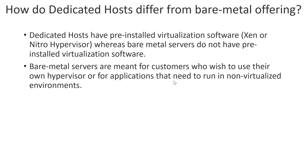Bare metal servers are meant for customers who want to use their own hypervisors, or who have applications in a legacy environment that cannot run on a virtualized environment. They want a non-virtualized environment but still want to use the feature set provided by the AWS platform. You can select bare metal servers and run those applications on top of bare metal EC2 instances. You can also bring your own virtualization software — for example, VMware — as a hypervisor on top of bare metal servers. And you can still continue using other AWS services such as Elastic Load Balancing, EBS, and VPC.